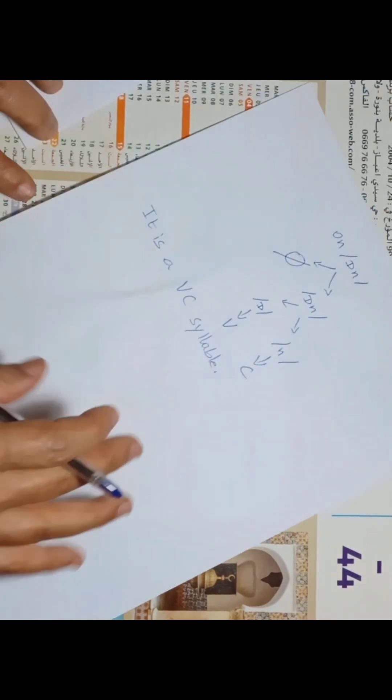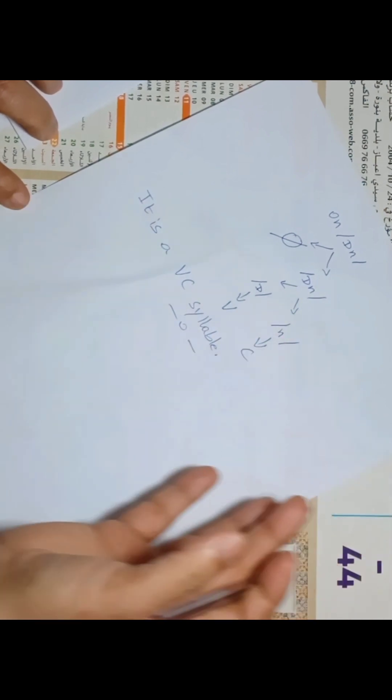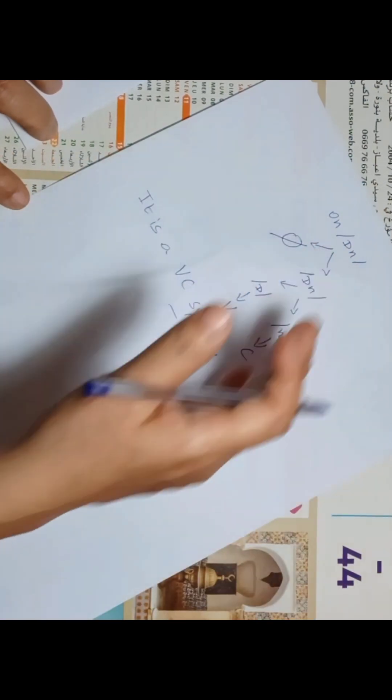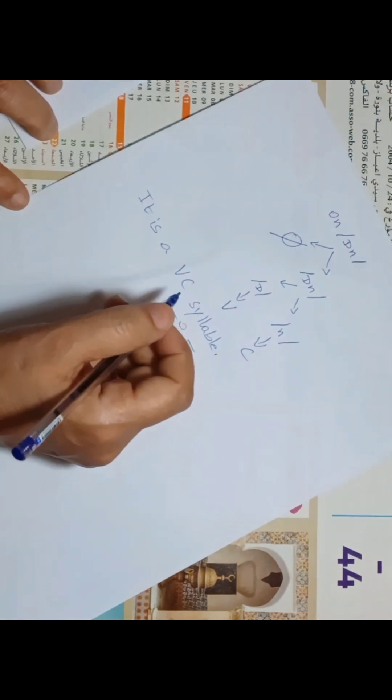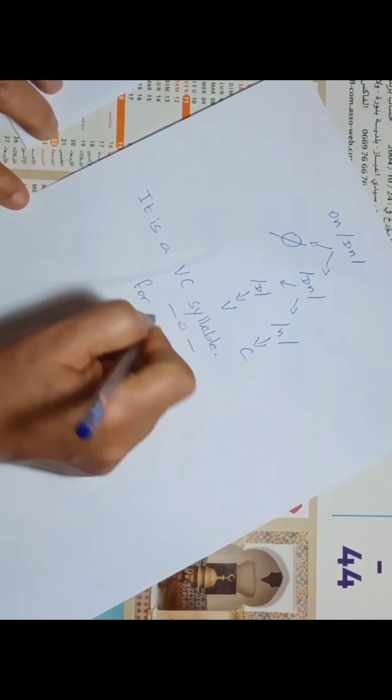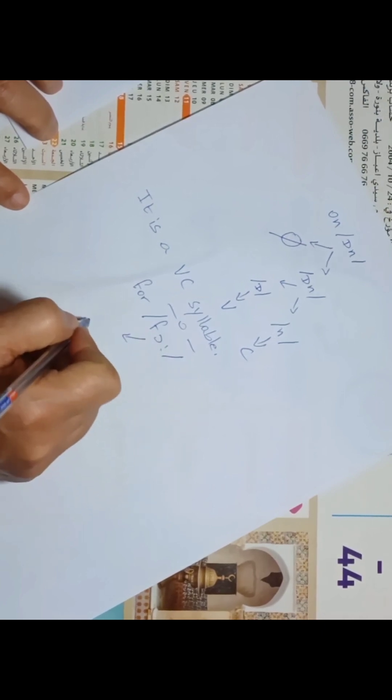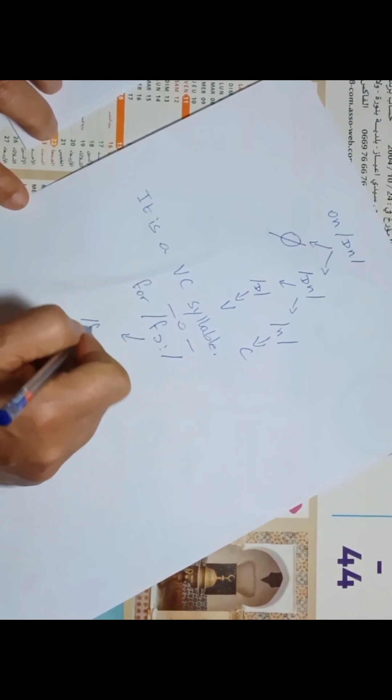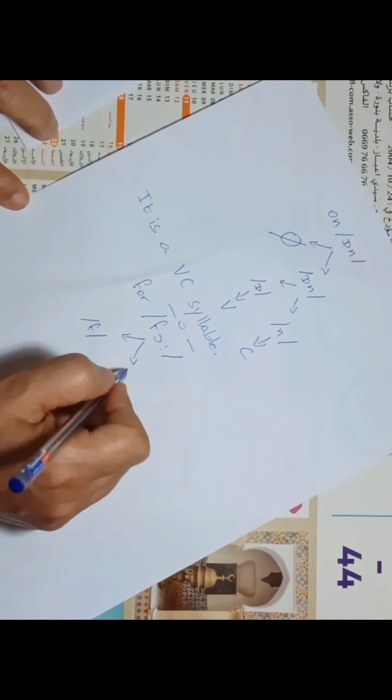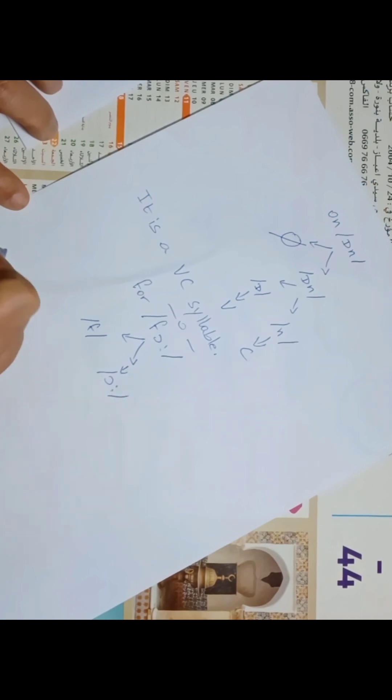Sometimes you find all the components in a syllable. Now let's move to another example: 'for'. We transcribe it, and here we have the onset /f/, and the rhyme is composed only of the vowel sound /ɔː/. So it is a CV syllable.